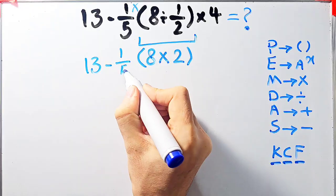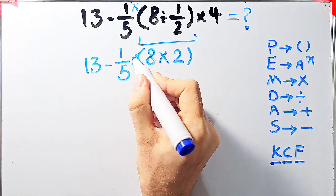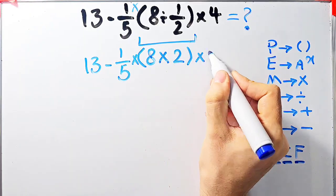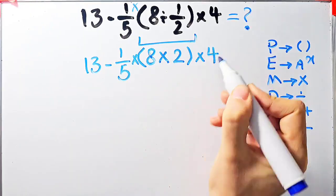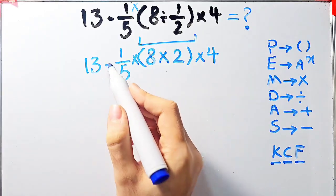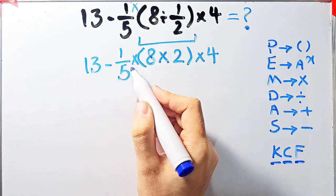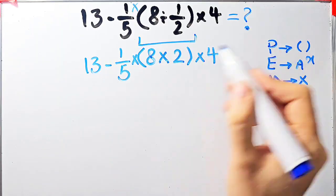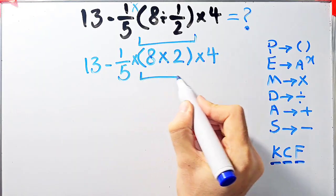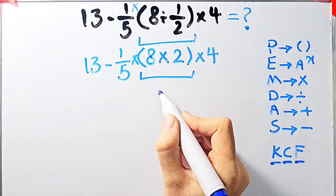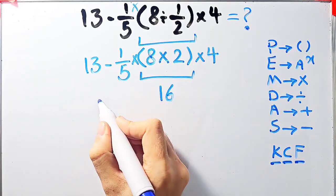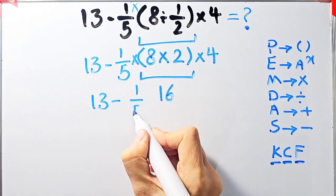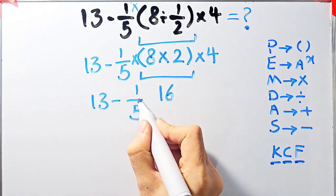Now we have 13 minus 1 over 5, then times open parentheses 8 times 2 close parentheses, times 4. Again we have subtraction, multiplication, and parentheses. First we simplify the parentheses: 8 times 2 equals 16. Now the question is 13 minus 1 over 5, then times 16, times 4.